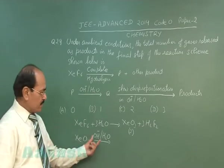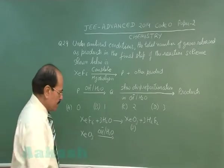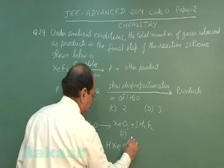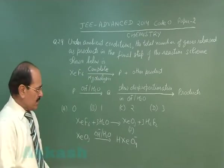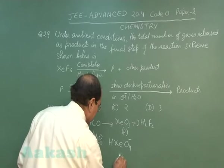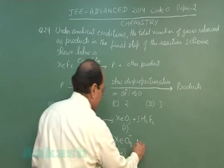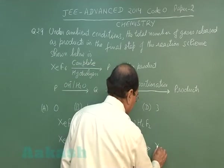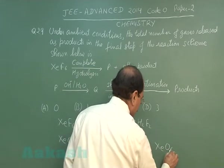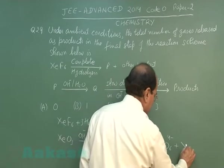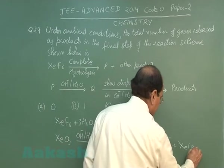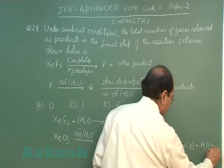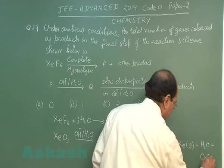Xenon trioxide in presence of an aqueous alkali gives HXeO₄⁻. This is the product Q. Q on disproportionation gives XeO₆⁴⁻ plus xenon plus water plus oxygen.